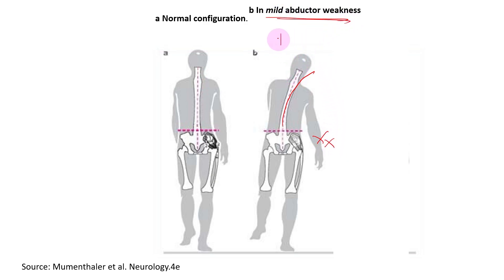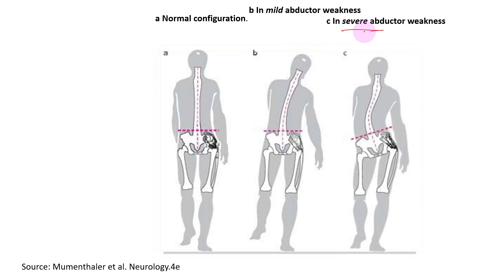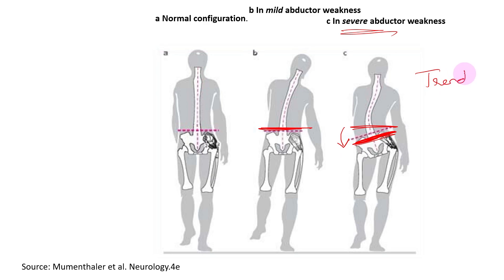In mild abductor weakness, you will see a slight shift of the body towards the affected side — this is called the Duchenne phenomenon. With severe abductor weakness, even this compensatory movement of the upper body is insufficient, so the pelvis sags downwards from its horizontal position. This is what is called the Trendelenburg sign.